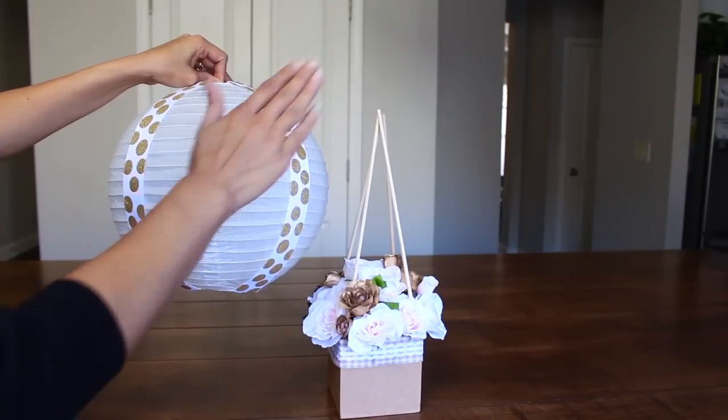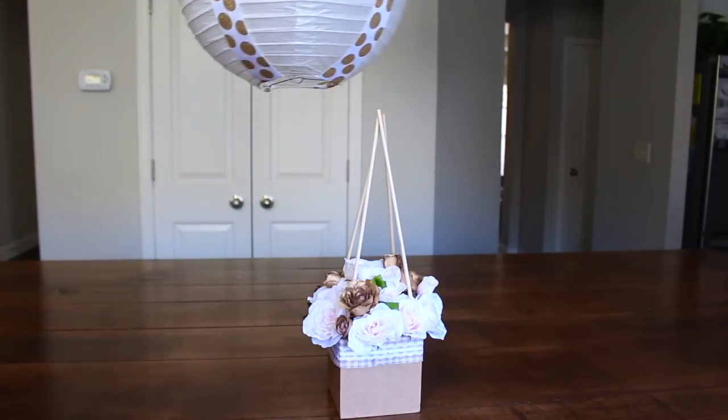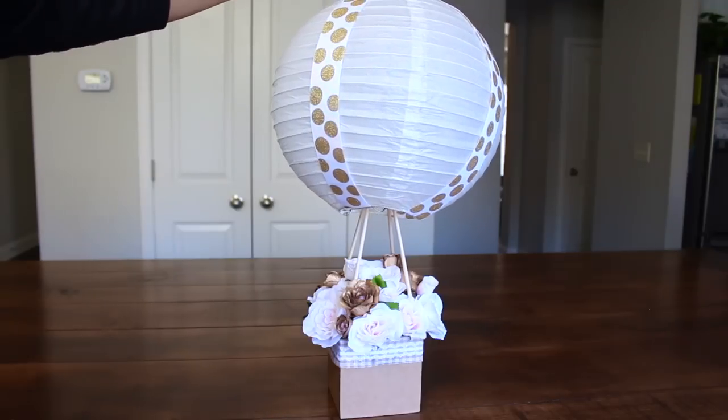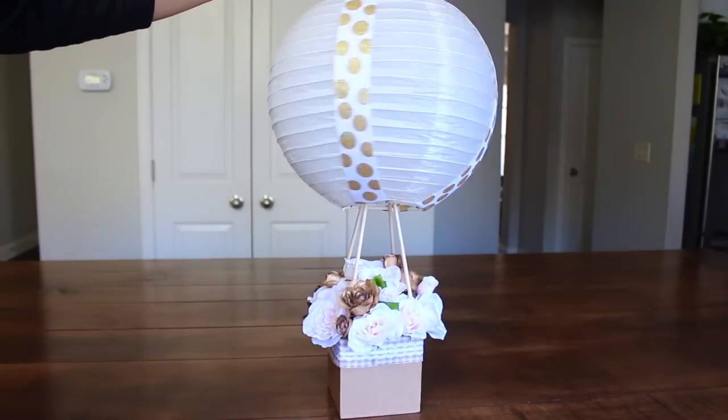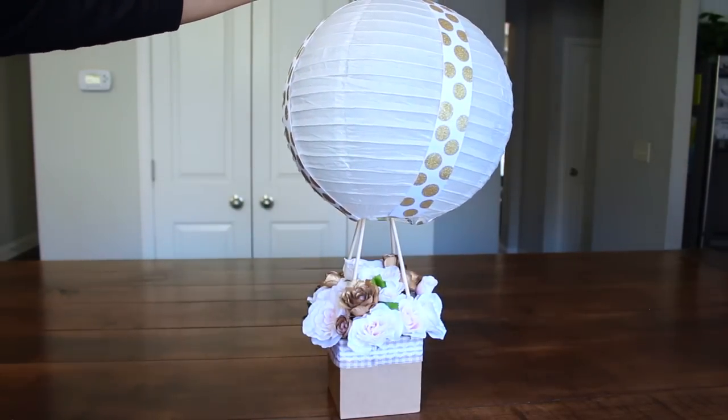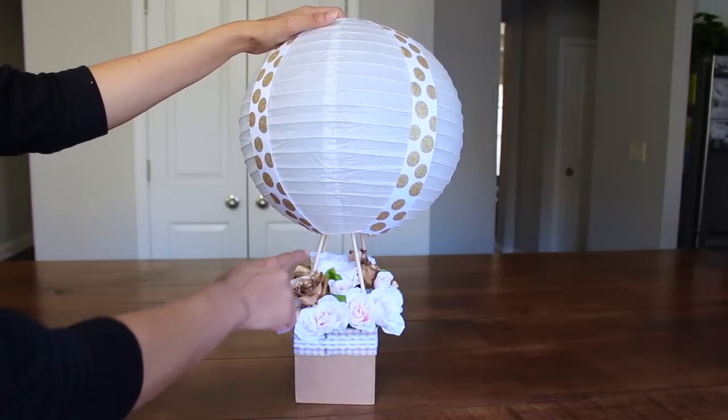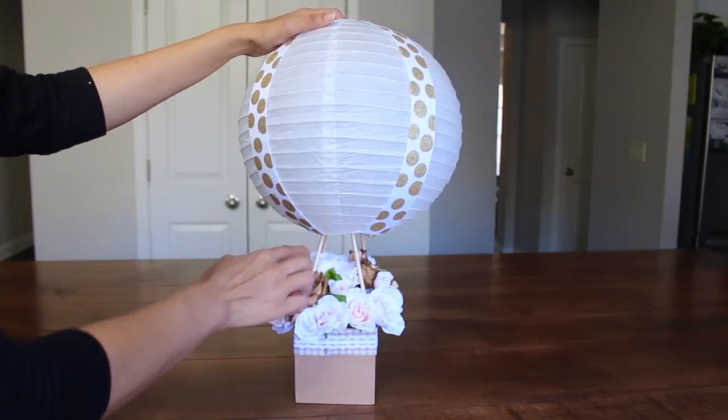Next I'm going to place my lantern over my arrangement. Just make sure that it's aligned wherever you want the ribbons to show. Now I'm going to add a little bit of hot glue to the dowels so it can help the lantern stand straight.